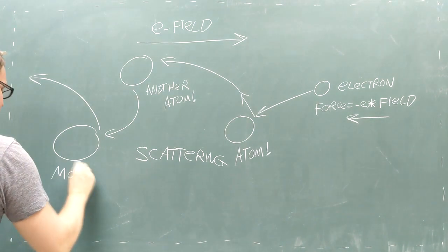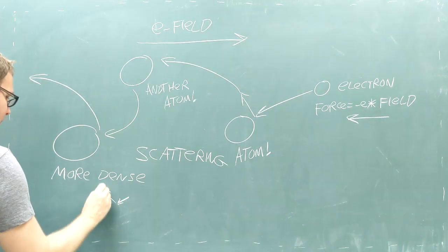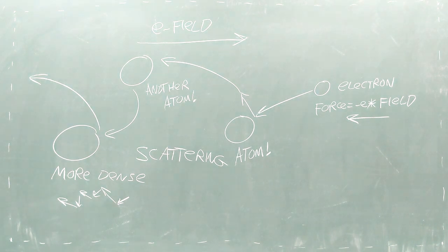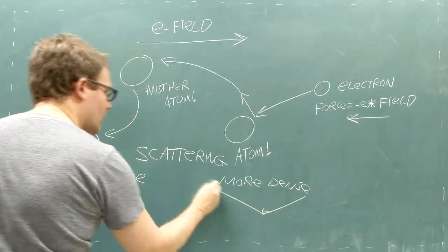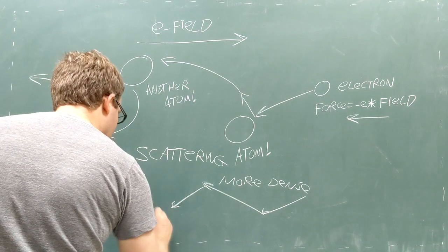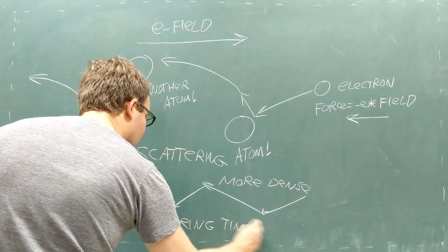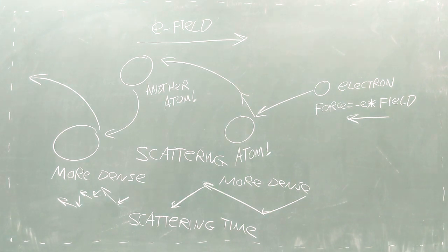The more dense the metal is, the shorter the amount of time the electron will travel between collisions. The less dense the metal is, the longer the time between collisions. We call this average amount of time the scattering time, which is a number unique to every kind of metal.